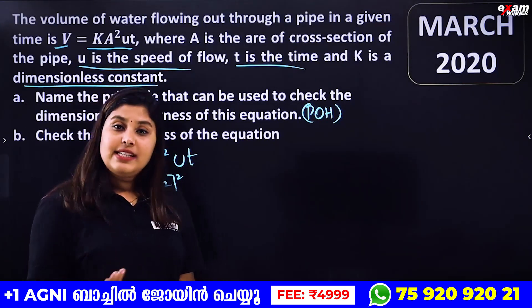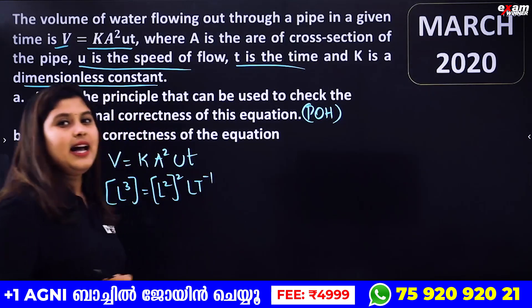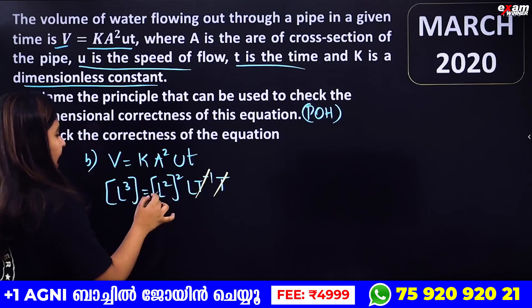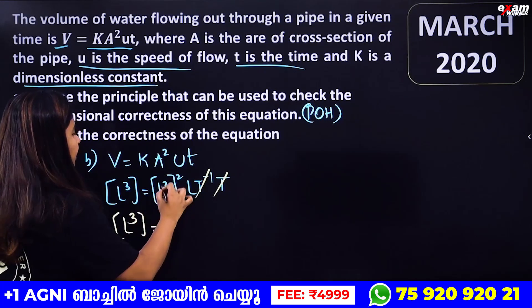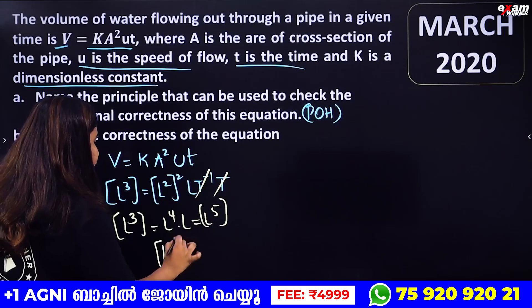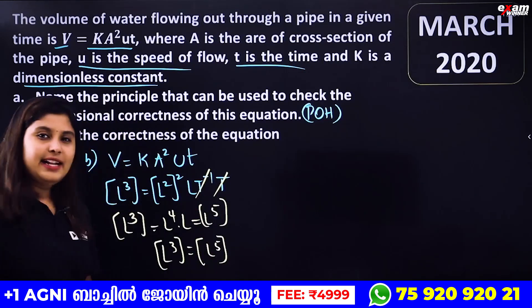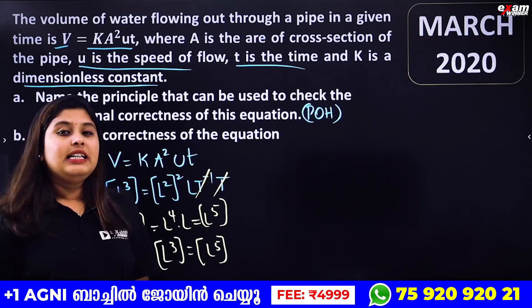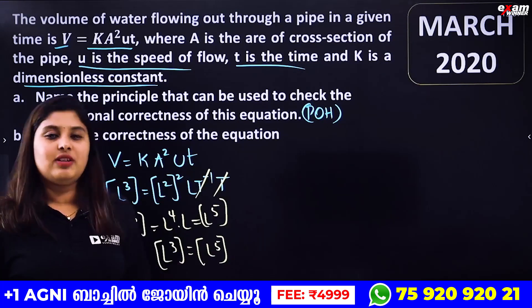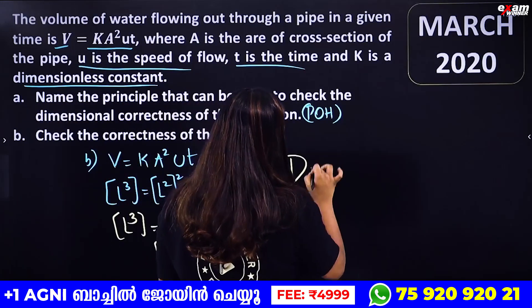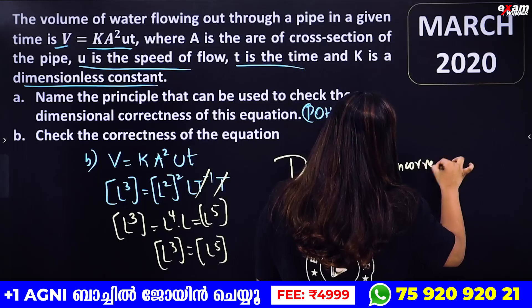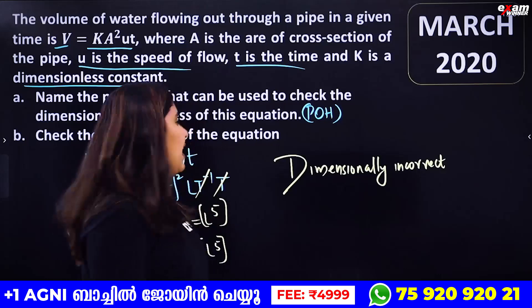Let's check the equation V = KA²UT. The dimension of V is L³. K is dimensionless. A is area, so A² is L⁴. U is velocity, so its dimension is LT⁻¹. T is time, dimension T. Multiplying: L⁴ × LT⁻¹ × T = L⁵. So LHS is L³ but RHS is L⁵. Since L³ ≠ L⁵, this equation is dimensionally incorrect.